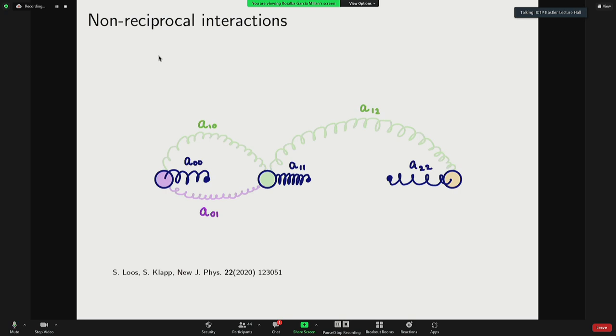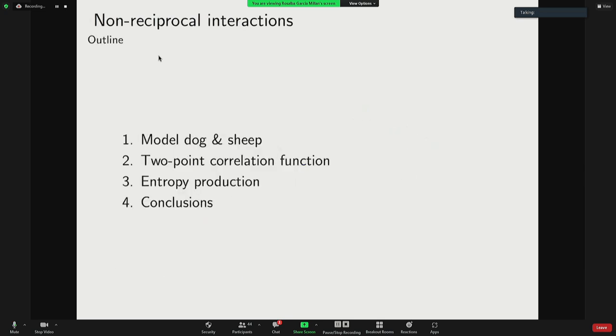This system was generalized in the paper by Laus and Clapp. One of the conclusions is that non-reciprocal interactions are out of equilibrium in general, except for some particular choice of the parameters. So this is the outline of my talk. I'm going to present the model of dog and sheep. Then I'm going to talk about the two-point correlation function and the entropy production. The main motivation is to understand how non-reciprocal interactions are related to time irreversibility. Another very strong motivation for us is to understand how to implement pairwise interactions in a microscopic theory. So we derive a field theory that is able to retain these microscopic interactions.